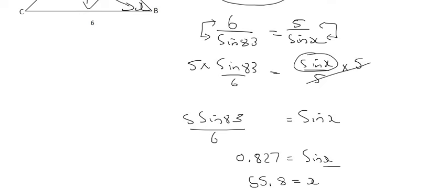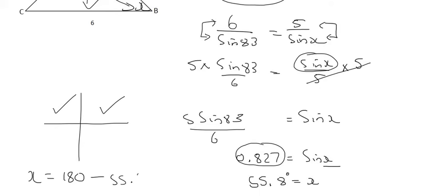But I wonder if any of you can remember the ambiguous case. Remember we said whenever we're doing sin, we have to look out for the ambiguous case, because in trigonometry, sin is positive in quadrant 1 and quadrant 2. And so we've just looked at quadrant 1. And so quadrant 2 would say that x is equal to 180 minus the 55.8.